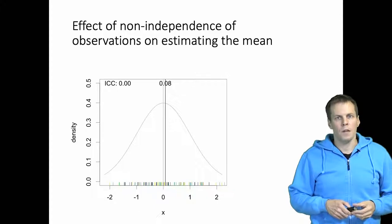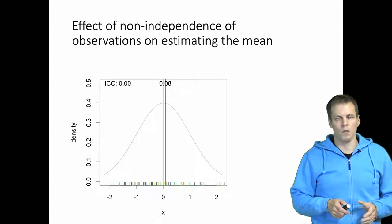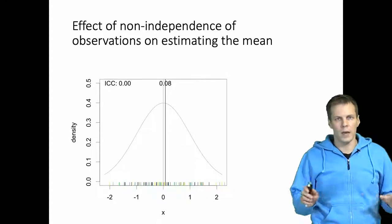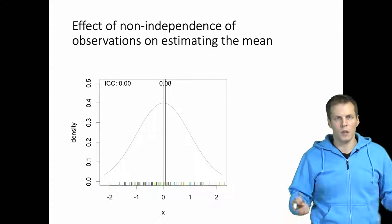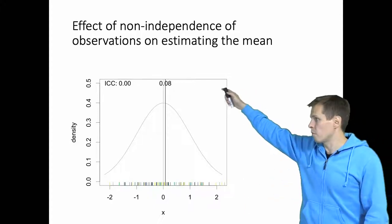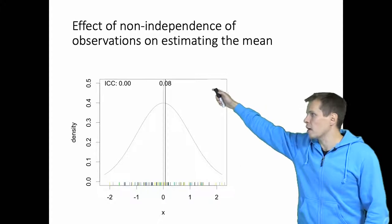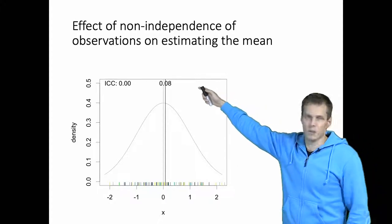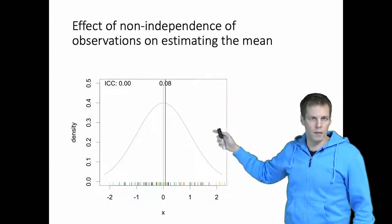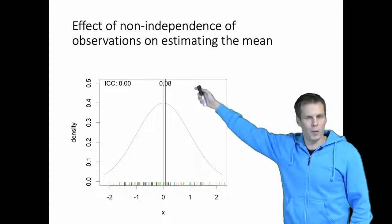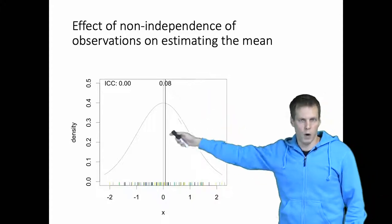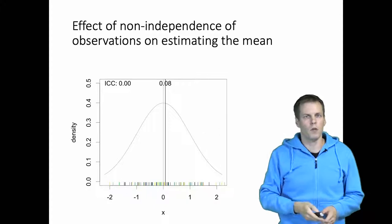If the intraclass correlation is zero, or there is no dependence between the observations within a cluster, we get a very precise estimate of 0.08 for the mean. The actual population mean is zero and the population variance is one. The intraclass correlation is zero.